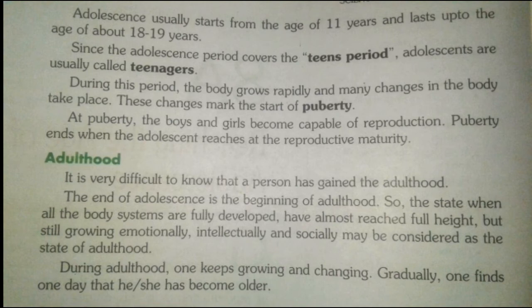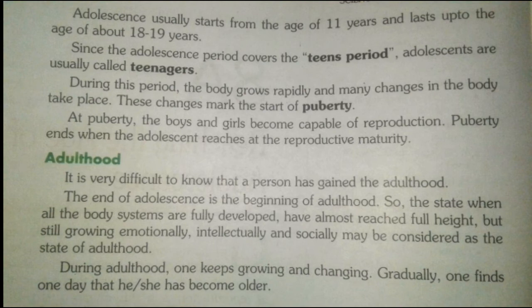The next and last stage is adulthood. It is difficult to determine exactly when a person has gained adulthood — the end of adolescence is the beginning of adulthood. When all body systems are fully developed and the person has almost reached full height, but is still growing emotionally, intellectually, and socially, they may be considered to have reached adulthood. During adulthood one keeps growing and changing gradually.